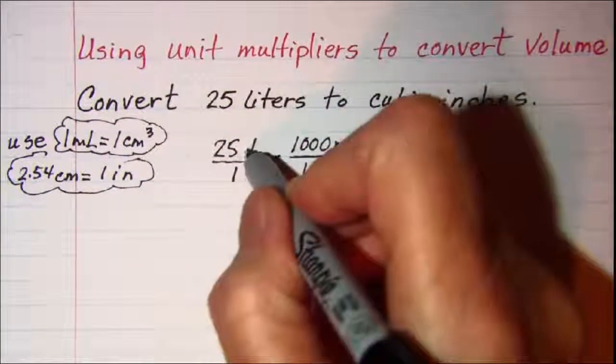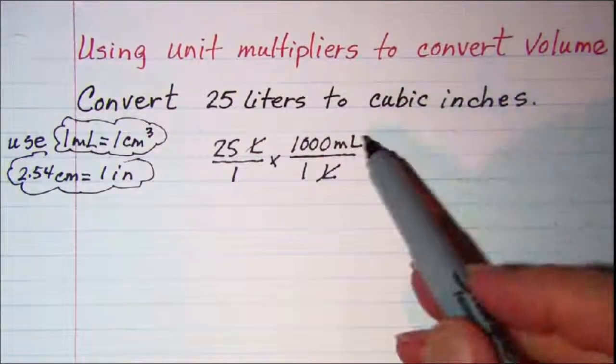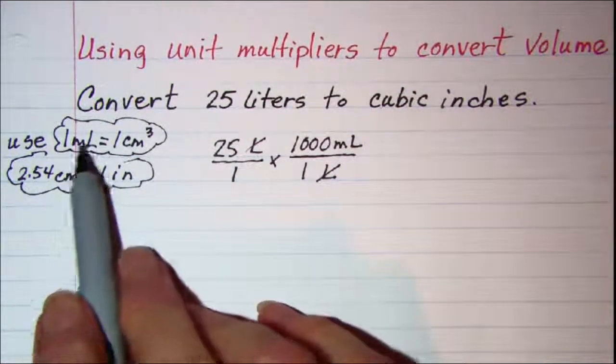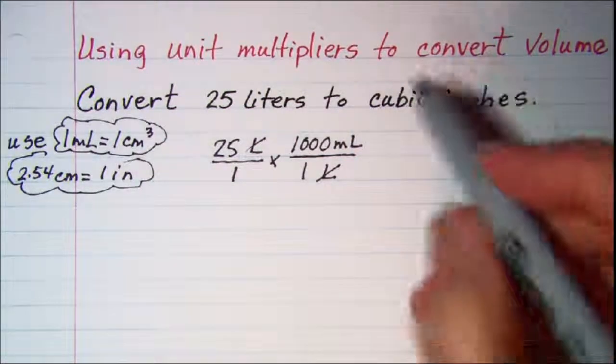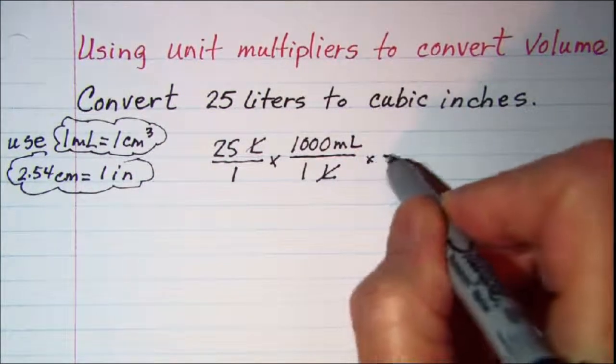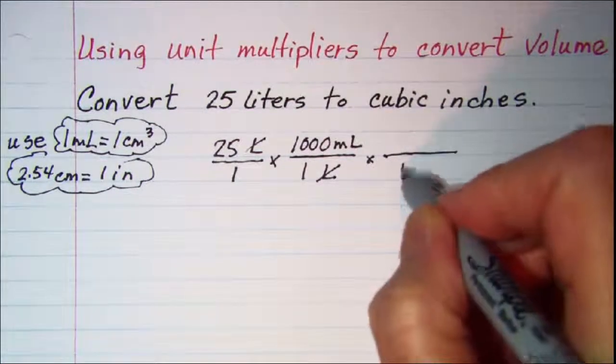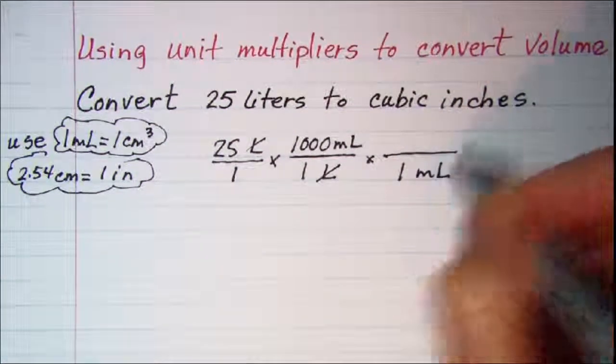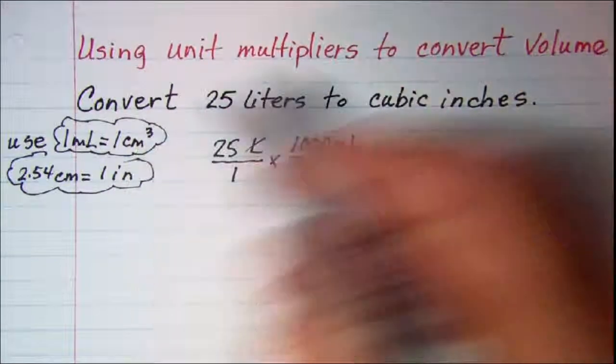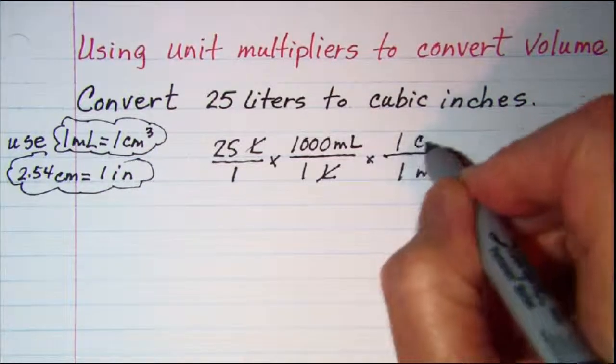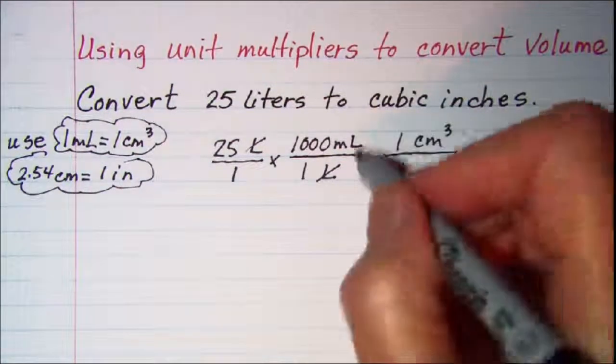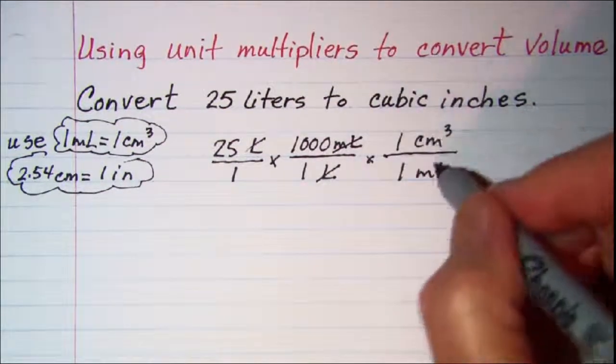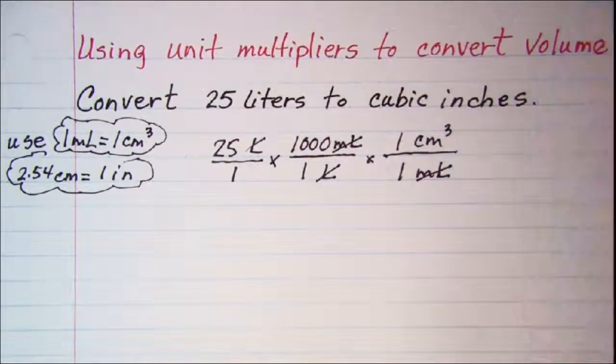Now our liter units will cancel and I am in milliliters now. Since I am in milliliters now, I can use this in a unit multiplier. My milliliters are in the top so I want 1 milliliter in the denominator and that is equivalent to 1 cubic centimeter. I will put that in the numerator. Now this unit in the top and this unit in the bottom will cancel.